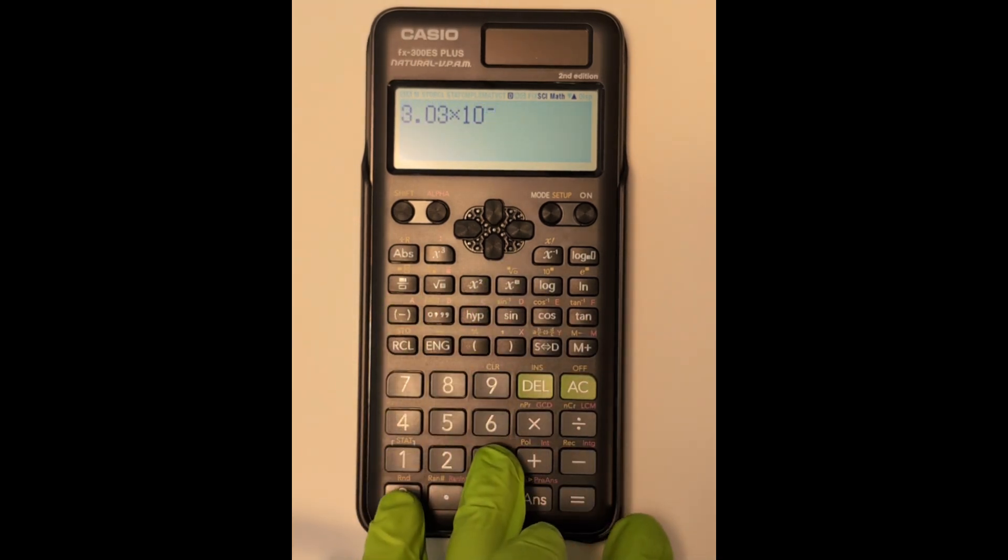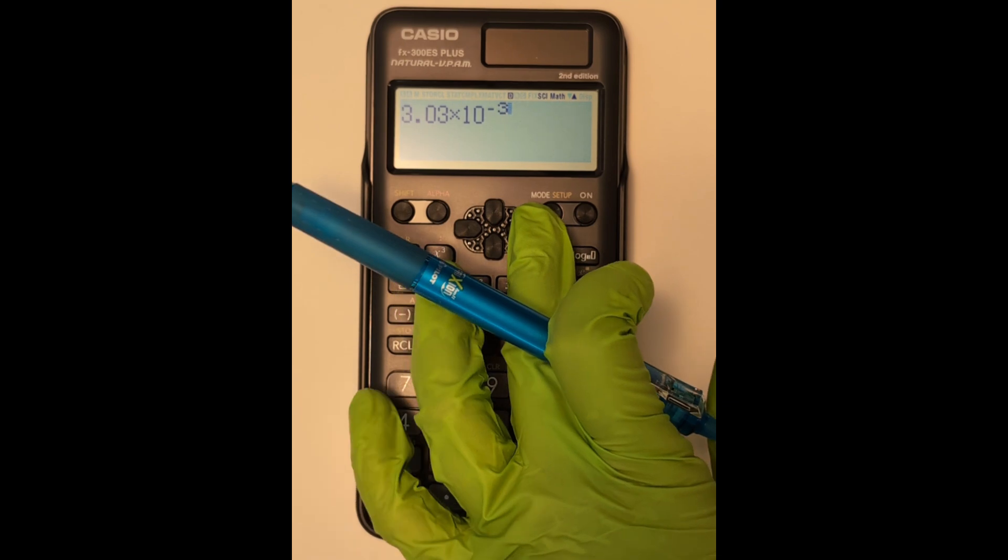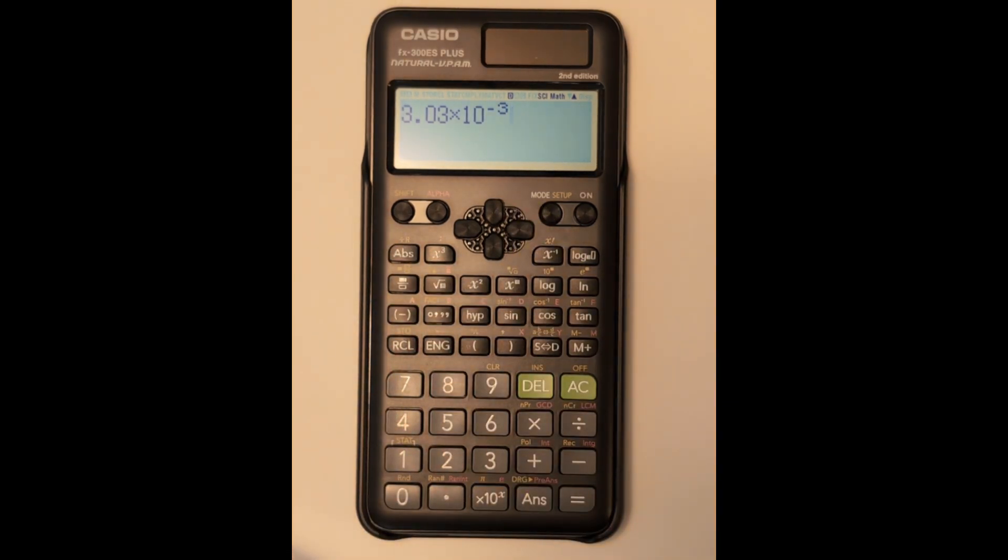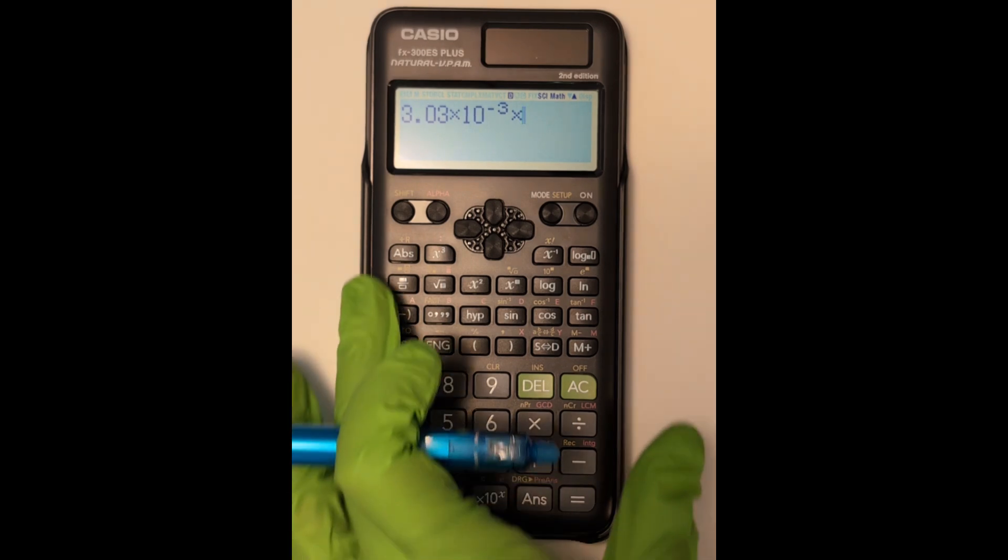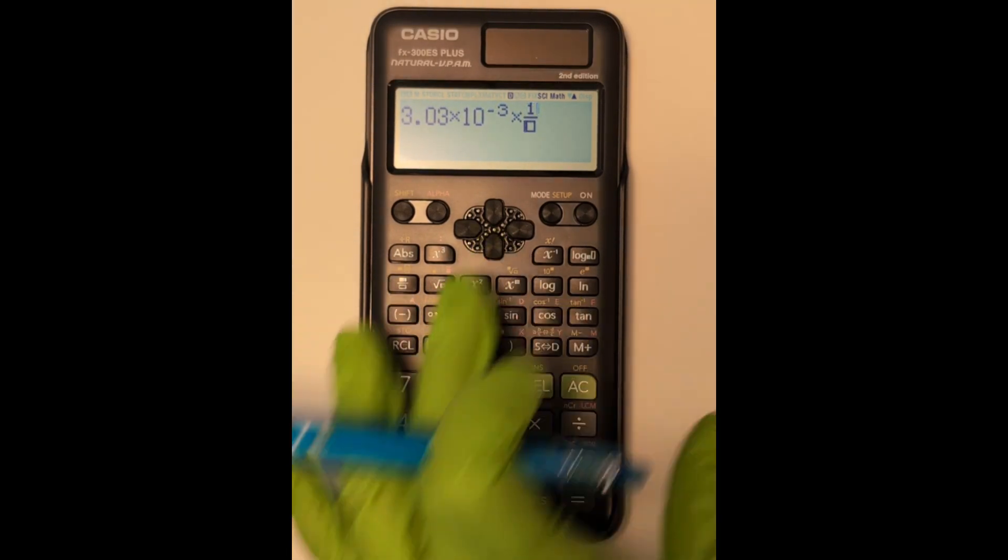I'm just going through that same problem again, but instead of using the times 10 button at the bottom, I'm using the exponent button higher up on the calculator.